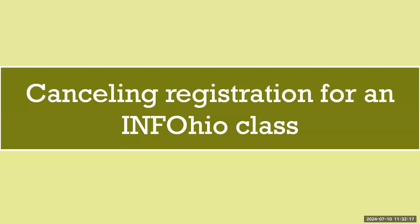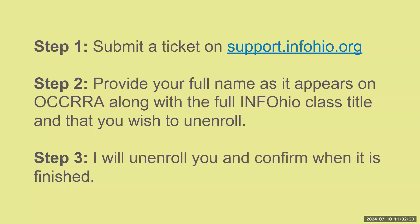If you registered for one of InfoOhio's classes by mistake, or do not wish to take the class anymore, please follow these instructions so that you can be removed from the class roster in OCRA. Step one, submit a ticket on support.infoohio.org. You will need to provide your full name as it appears on your OCRA profile, along with the full class title of the InfoOhio class you wish to be unregistered for. Once you have been unregistered, you will receive a confirmation email letting you know.